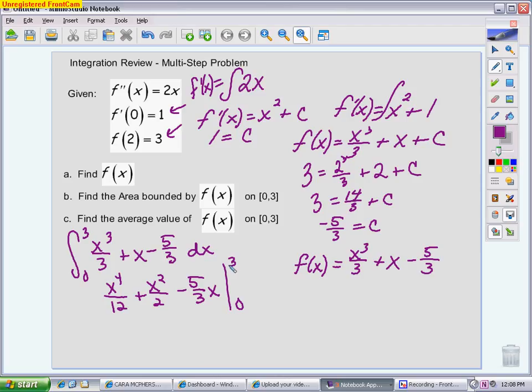So at this point, I'm putting 3 in everywhere, and I'm really going to use my calculator to help me here. So I'm going to have 3 to the 4th divided by 12 plus 3 squared divided by 2 minus 5 thirds times 3. And when I do that, I'm going to get a fraction answer. It's really easy to work with. I get 25 fourths minus, when I put 0 in, I get 0. So that is my area. So I would say area equals 25 fourths. You could say unit squared. You could also write it as 6.25, which is the decimal equivalent.